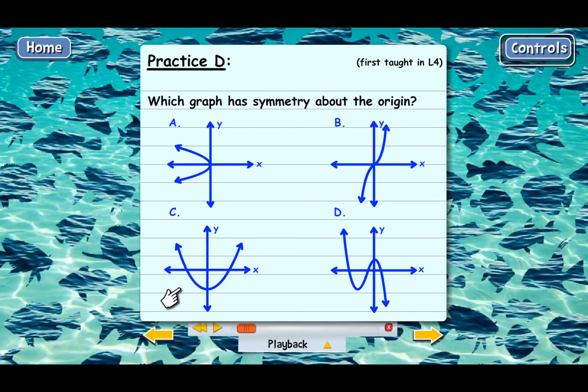We're supposed to figure out which of these graphs has symmetry across the origin. Remember from the lesson, this means if you took the curve and flipped it across the origin, you would end up with a curve that looks exactly like what you started with.